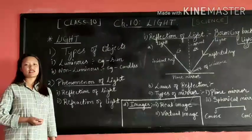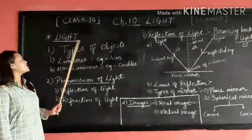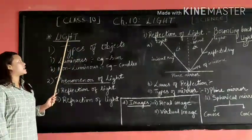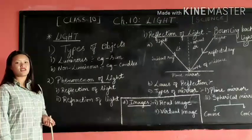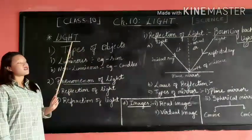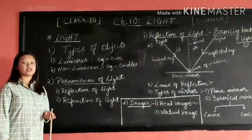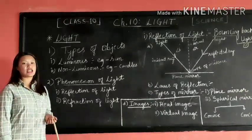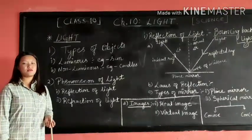First of all, let us see what is light or what is meant by light. Light is a form of energy that produces a sensation of sight when it enters into our eyes. It is also a form of energy that enables us to see the objects around us. Or we can say that light is an electromagnetic wave that travels through any medium like air, water, glass and through empty spaces.